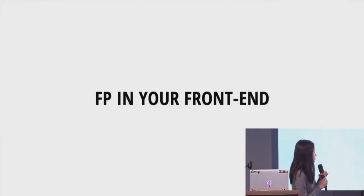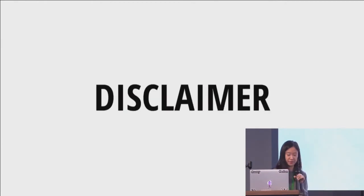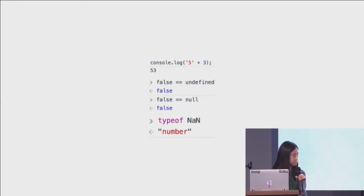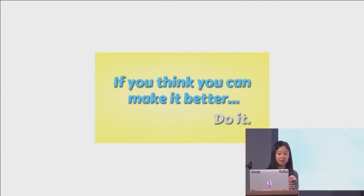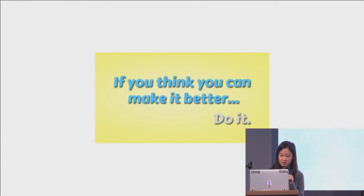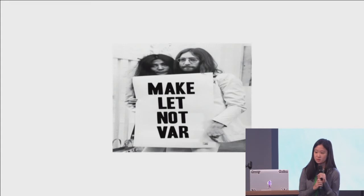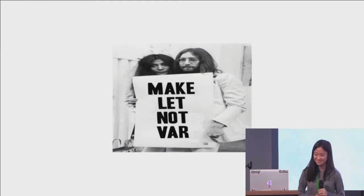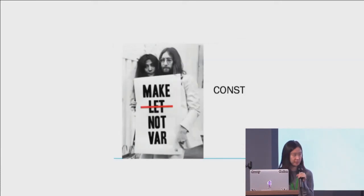Now let's talk about functional programming on the front end. Disclaimer — I know this is still JavaScript, so some things will happen, but that's not so bad. I feel like if you think you can make things better, we should do it. So first things first: let's all stop using vars. Let's change it to let because it's awesome — or even better, use const.